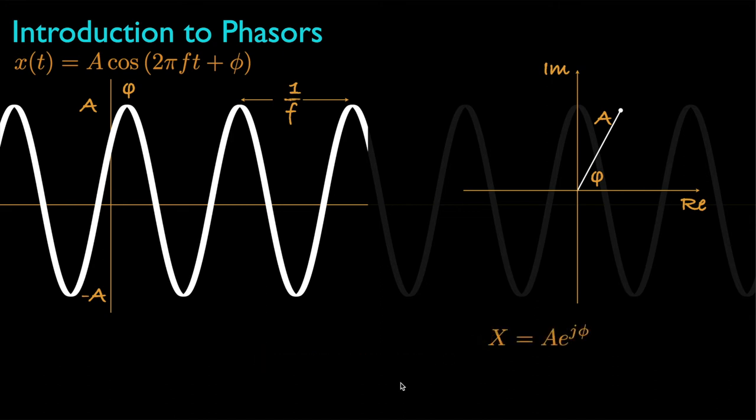Now, mathematically, we represent a phasor as a complex number with an amplitude A and a phase phi, or with a real part equal to A cosine phi and an imaginary part equal to A times the sine of phi. Now, for a shorthand notation, we'll often represent the amplitude and the phase like this, and it's important to be familiar with all of the ways to represent a phasor.